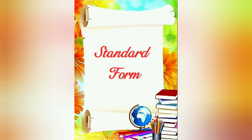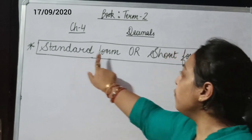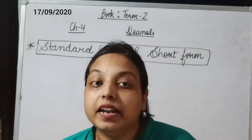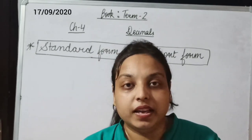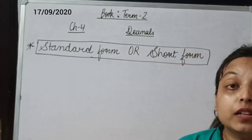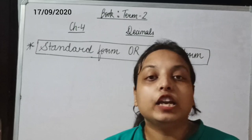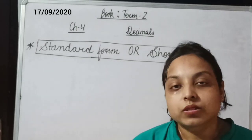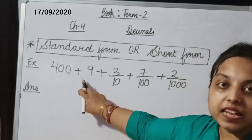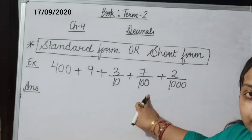Now the next topic is standard form, also called short form. This is totally opposite to expanded form. In expanded form we were breaking the number as the sum of the place value of each digit, but in standard form the expansions are given — either fractional or decimal expansion — and you have to write the number from it.